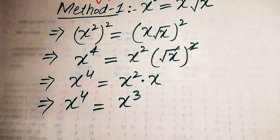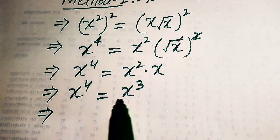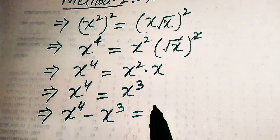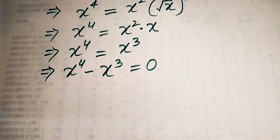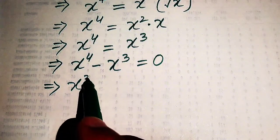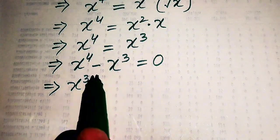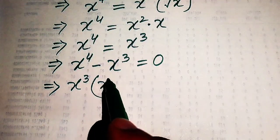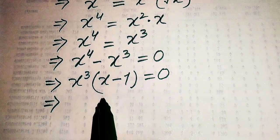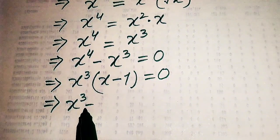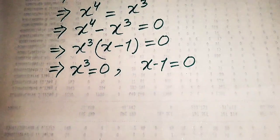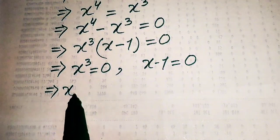We move x cubed from the right hand side to the left hand side, giving x⁴ minus x³ equals 0. Both terms involve x cubed, so we take x cubed as a common factor, yielding x³(x minus 1) equals 0. We then split this into two cases: x³ equals 0, and x minus 1 equals 0.